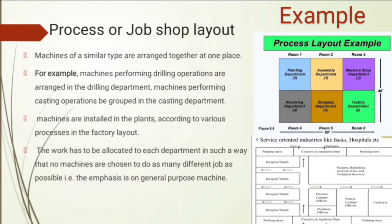In a hospital example, there is an X-ray department, a cardiology department, and an ICU — the layout is based on their processes. In a manufacturing example, you have a painting department, assembly department, machine shop department, testing department, and shipping department. For service-oriented industries like banks, you can see areas like parking, hospital wards, casualty, inpatient department, business offices, and doctor lounges.